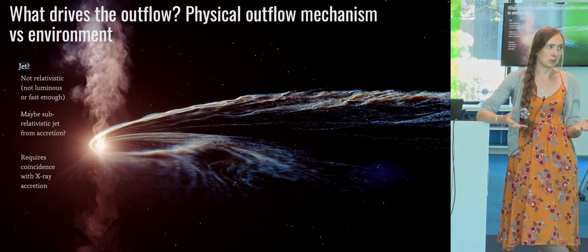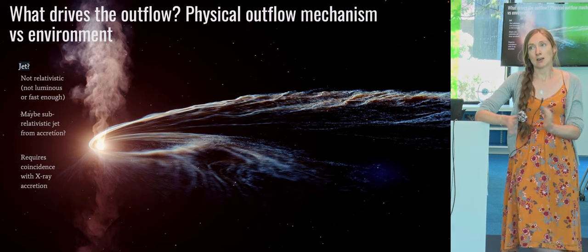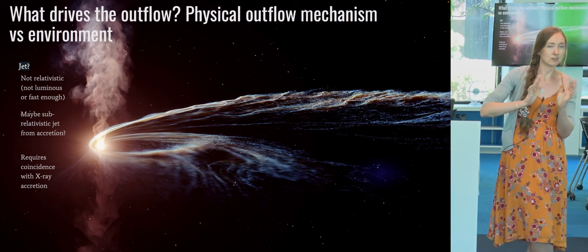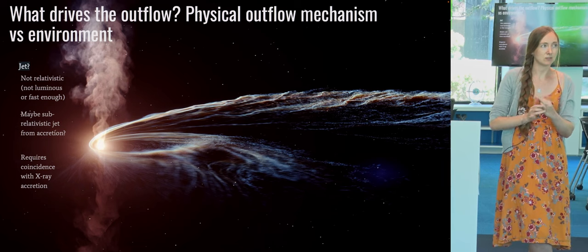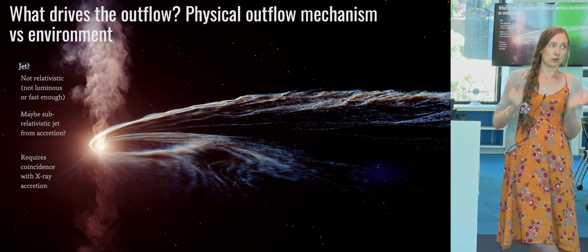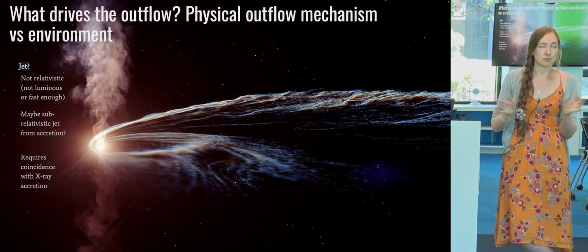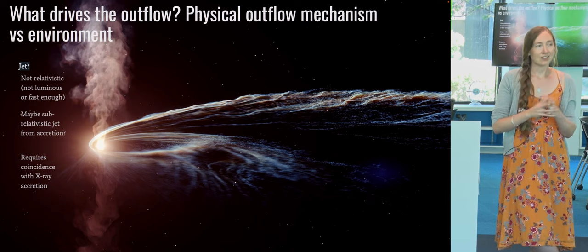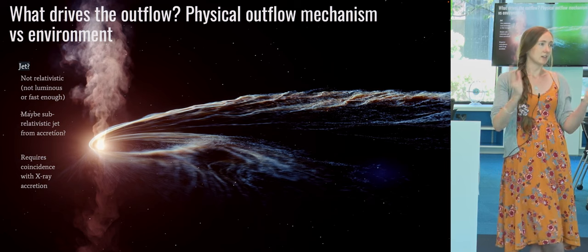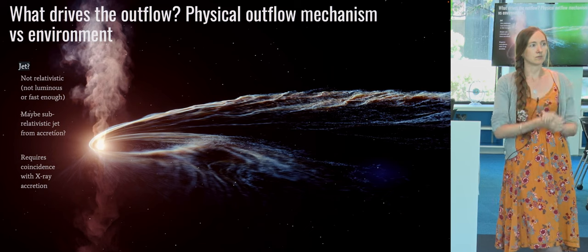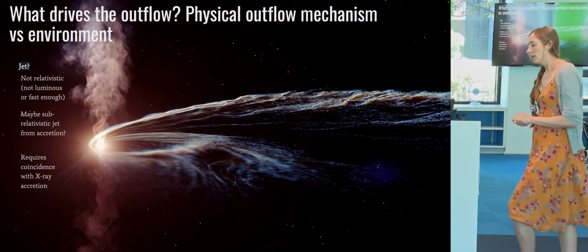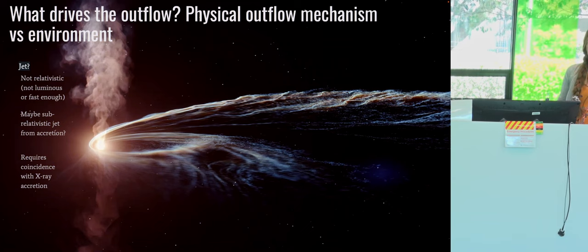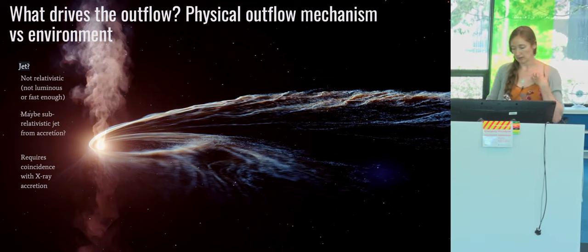There are a few different scenarios. The first is that the radio emission is produced by jets — whether they are really relativistic, highly collimated jets, or non-relativistic, like a sub-relativistic jet from accretion onto the black hole. That would be less collimated but still some kind of jet-like structure. We do know that accreting black holes tend to produce jets, whether or not we always observe them is under debate.